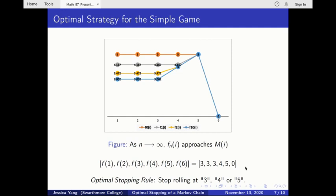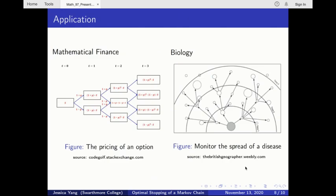In this figure, f sub n for each state is shown. As you can see, the sequence becomes incredibly close to the maximum expected reward function within only 10 iterations. This tells us that our optimal stopping rule is to stop whenever we roll a 3, 4, or 5.